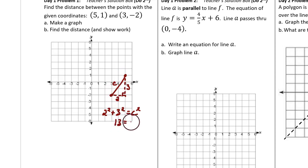This makes 13 equals c squared. So c is the square root of 13. That's how long it is from one point to the other.